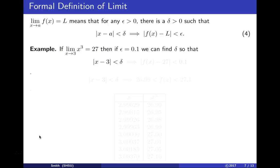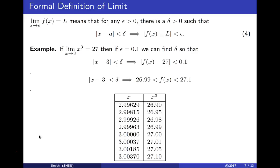Let's look at a table of values. If I want the distance from x to 3 to be less than delta, to force the distance from f of x to 27 to be smaller than 0.1, then f of x should be between 26.9 and 27.1. Here's a table of values given by a calculator or by Wolfram Alpha. Let's take a look at this table of values in the next slide.